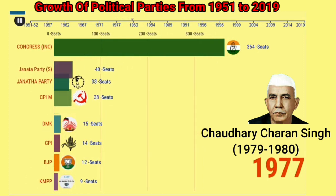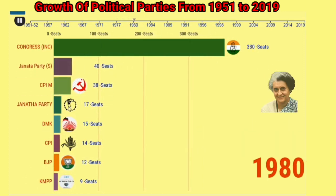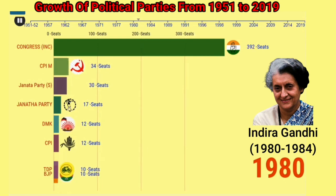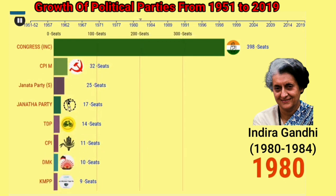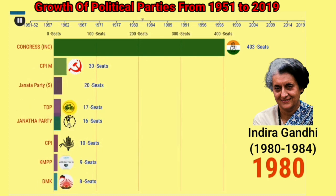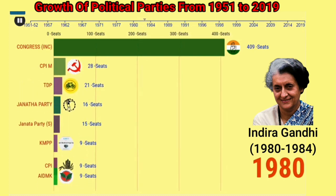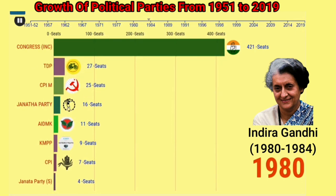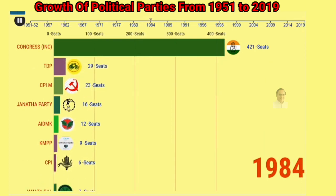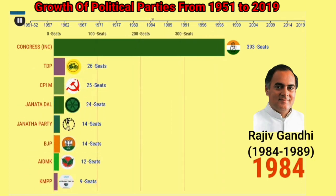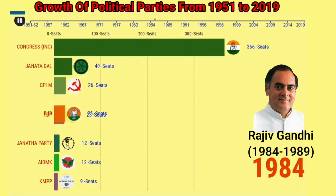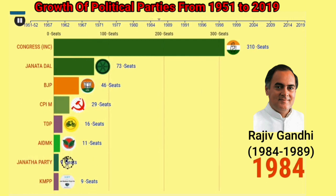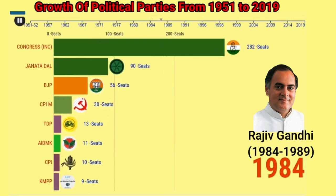Chaudhary Charan Singh is the only Prime Minister who never attended the parliamentary sessions. Indira Gandhi became the Prime Minister of India from 1980 to 1984. After the death of Indira Gandhi, Rajiv Gandhi became the Prime Minister of India from 1984 to 1989.